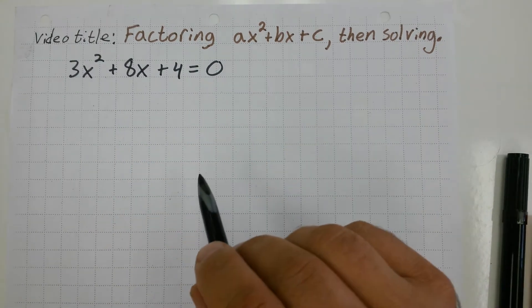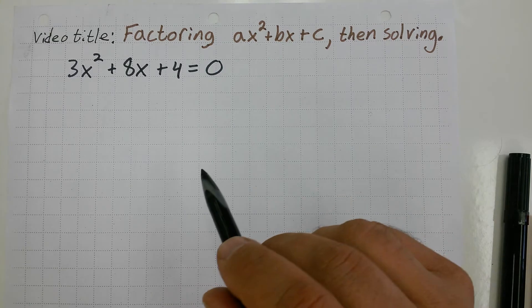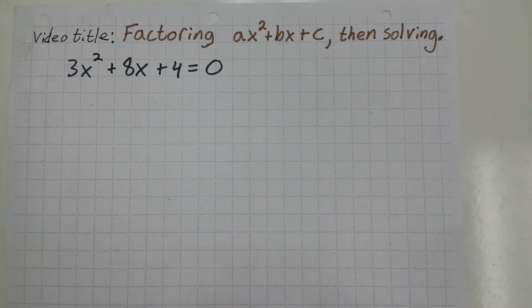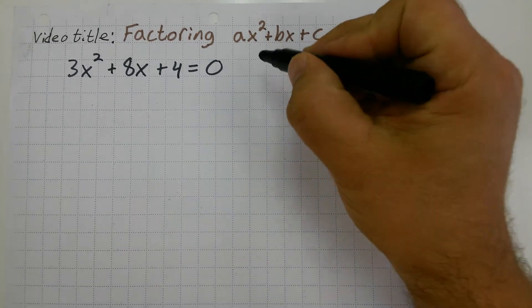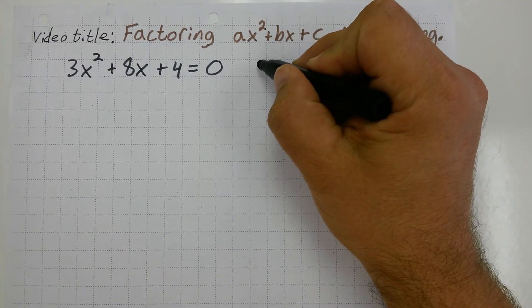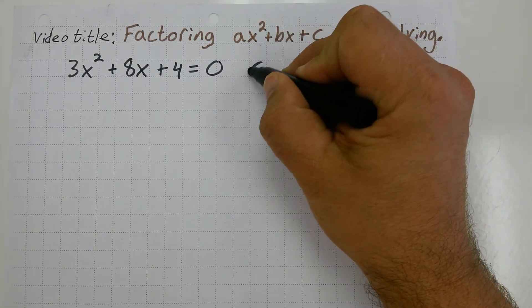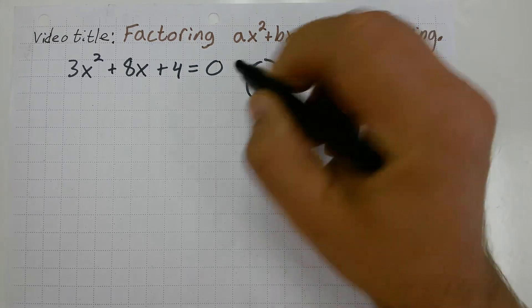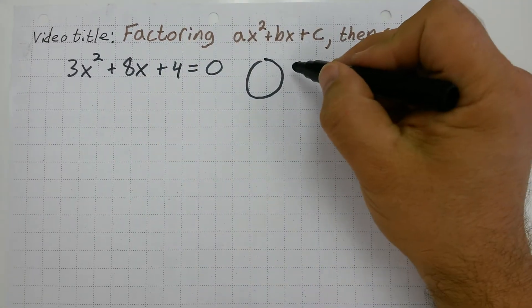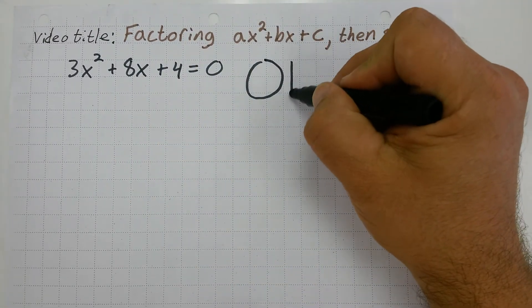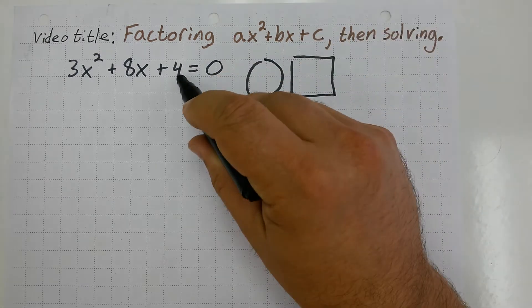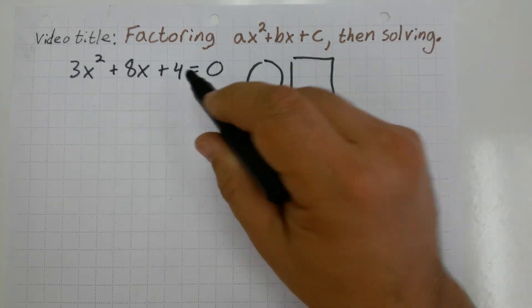There are a lot of different methods. Guess and test is something I want to steer clear of. What I want to do is find out what multiplies and adds to equal 8. It's got to add to equal 8, but it also has to multiply to equal the number in the back.